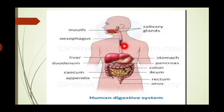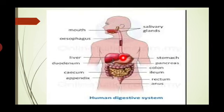Chemical digestion with the help of enzymes breaks down food particles. These are rhythmic waves of contractions that move food particles through the various regions where mechanical and chemical digestion take place.